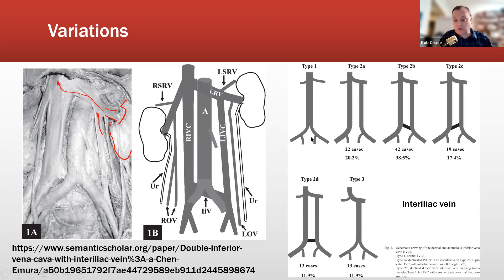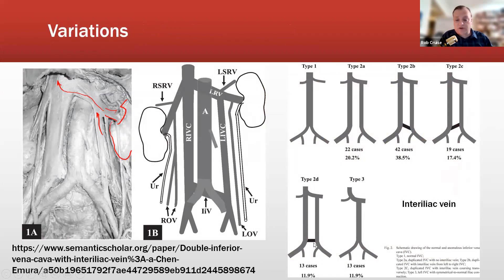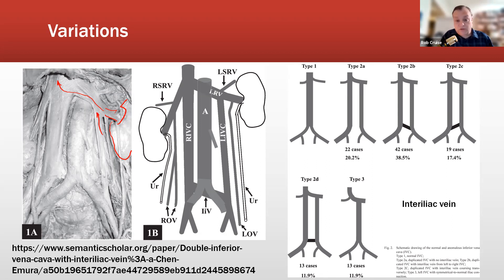There are several types. This is the normal. Type 2A has a duplication coming up to the left renal vein and then joining in. Another variant has an interiliac vein flowing left to right, and in yet another the interiliac vein goes right to left. Another variant is a shunt in between. And here there is a total absence of the IVC on the right side — it is all on the left side and dumps directly into the left renal vein, then goes up and joins the inferior vena cava after passing through the right renal vein.